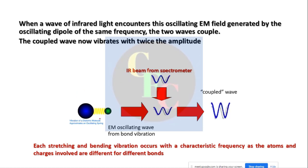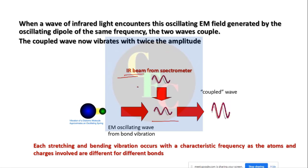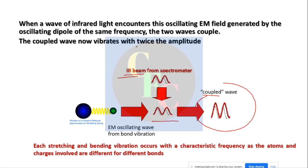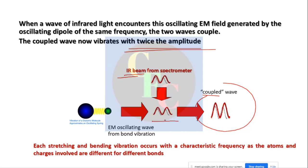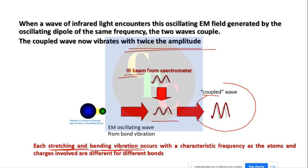In an IR instrument, when you put a sample which is vibrating, it produces an electromagnetic field, and you throw a beam of IR from the IR source towards it. When the frequency matches, they are said to have coupled, and they vibrate with twice the amplitude because they are in phase and resonate. This stretching and bending vibration is important in IR spectroscopy.